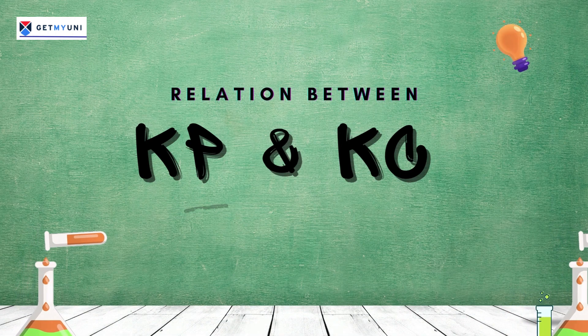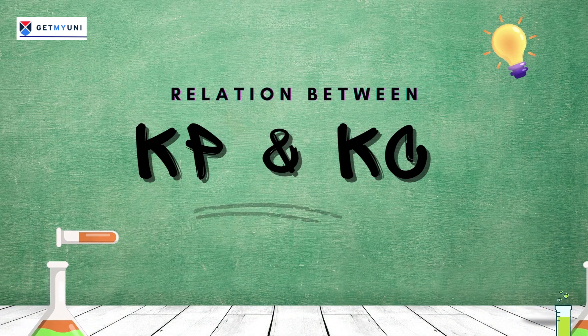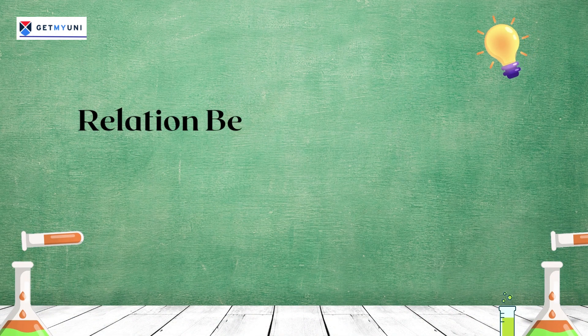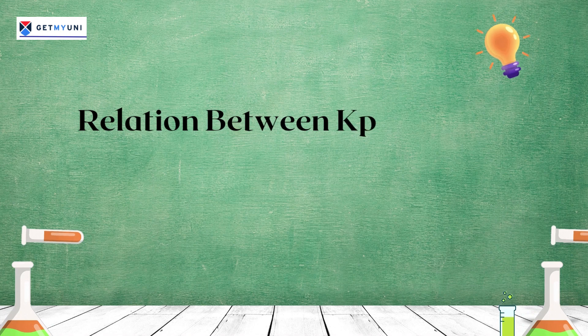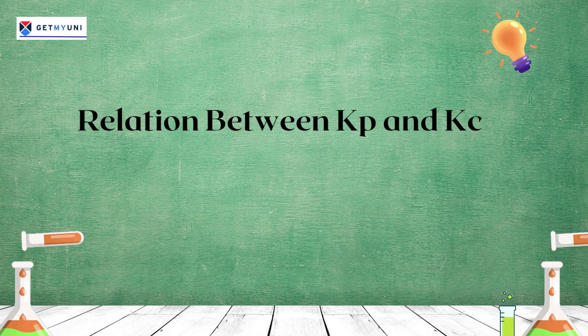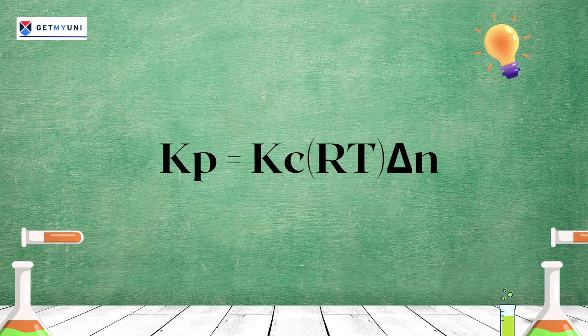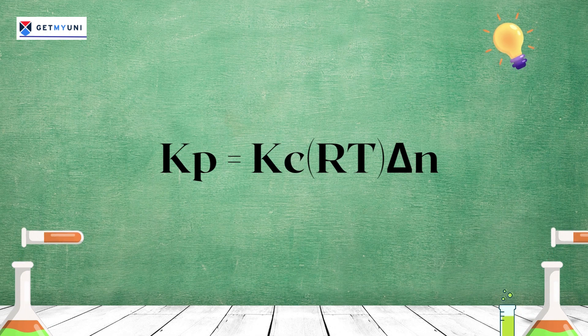The relation between Kp and Kc is expressed by the equation Kp = Kc · RT^(Δn), where Kp and Kc are the equilibrium constants for an ideal gaseous mixture.